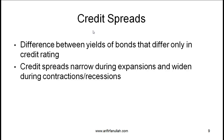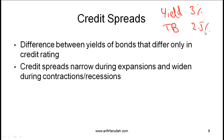Let's try to understand how we can explain the difference between the yields on different bonds. In the example, we had a 10-year corporate bond with a yield of 3% and a similar maturity Treasury bond with a yield of 2.5%. So there is a difference here — our absolute spread was 0.5%. The credit spread is the difference between yields of bonds that differ only in credit rating.